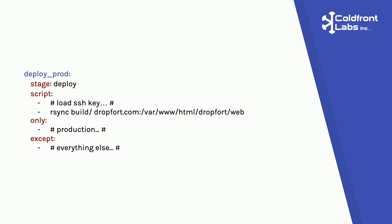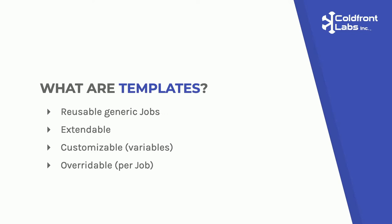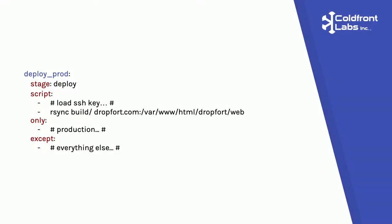A quick note: we used npm install in the demo, but npm ci is actually faster and better. With npm ci, lock files are expected and respected — the package-lock.json file is read to install exact versions, so your lock file actually does something. With npm install, the lock file is largely ignored for updates. Anyway, carrying on.